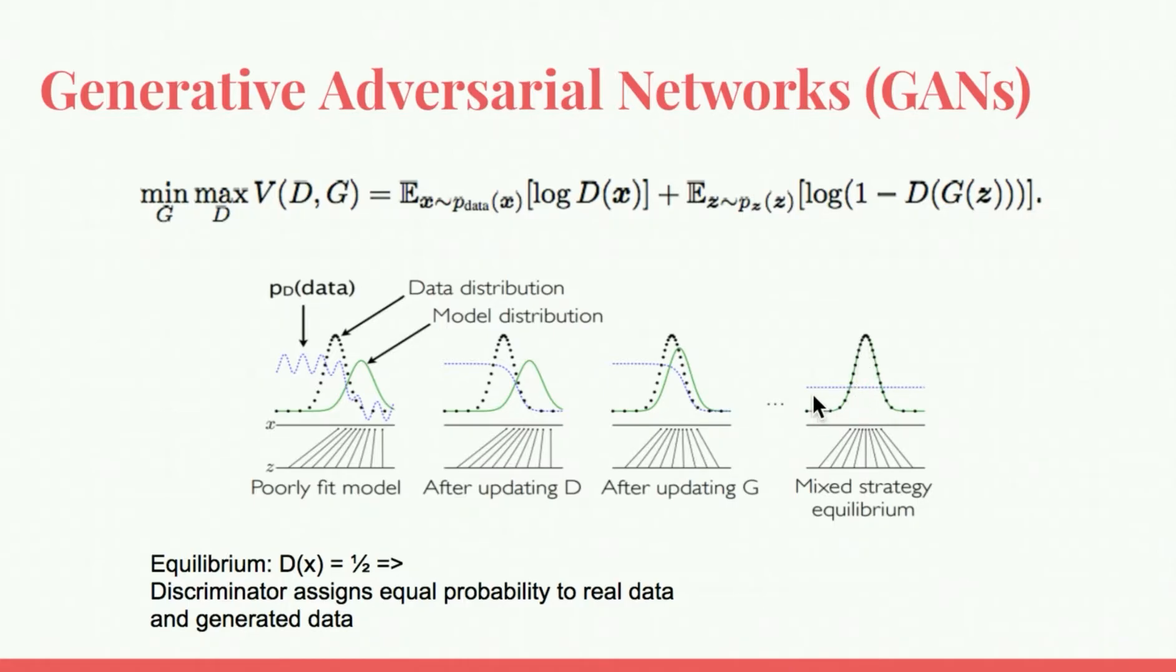Also, the dotted blue line that represents the probability assigned by the discriminator is right at one-half, which means that it cannot distinguish between real data and generated data.